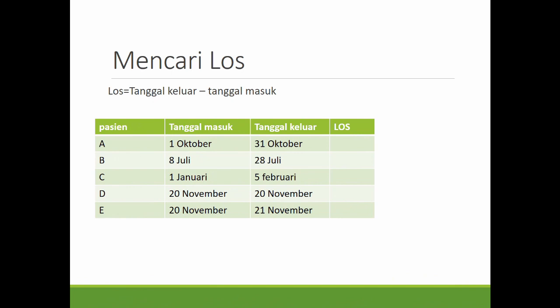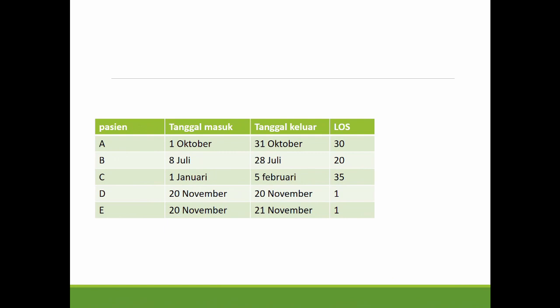Di sini mencari ALOS. Ada pasien A, B, C, D, E. Tanggal masuk pasien A tanggal 1 Oktober, tanggal keluar 31 Oktober. Silakan teman-teman hitung sendiri, di-pause dulu, hitung, nanti kita cocokkan. Untuk pasien A ALOS-nya adalah 30, pasien B adalah 20 yaitu tanggal keluar dikurangi tanggal masuk. Untuk C berarti 35, untuk D ALOS-nya 1 karena masuk dan keluar di hari yang sama, berarti pasien one day service. Pasien E juga 1.